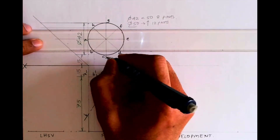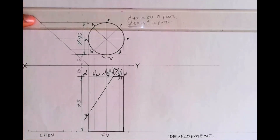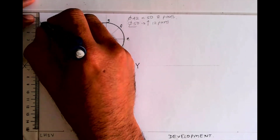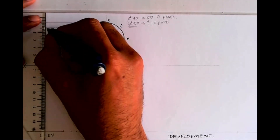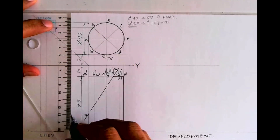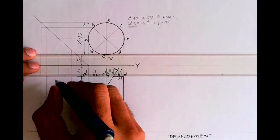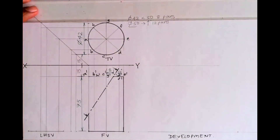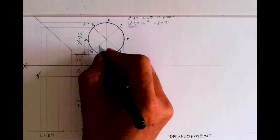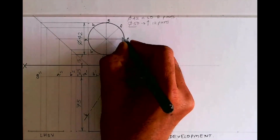Now draw the side view. In the side view we write double dash notation — so these are a-double-dash, b-double-dash, and so on.